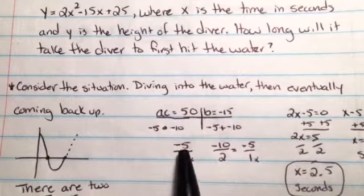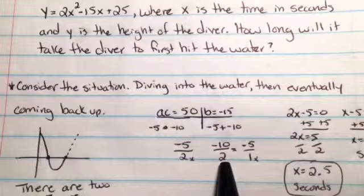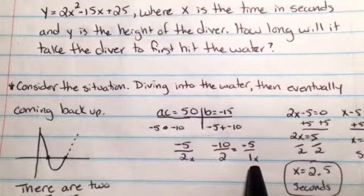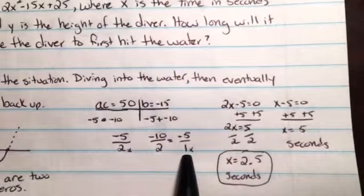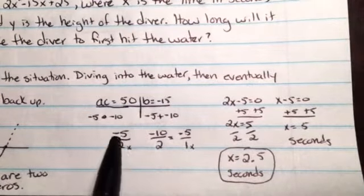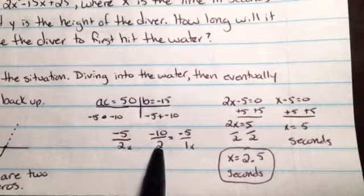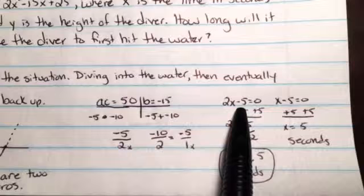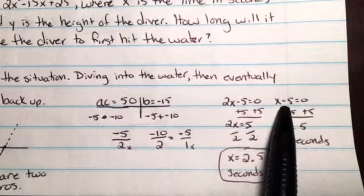Remember, you're dividing each of those factors by the a value. And in this case, this one simplifies to negative 5 over 1. Set these two expressions equal to zero. 2x minus 5 equals zero and x minus 5 equals zero.